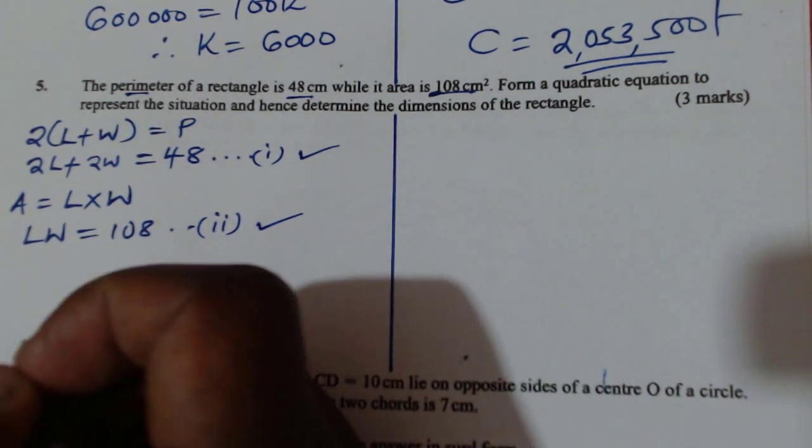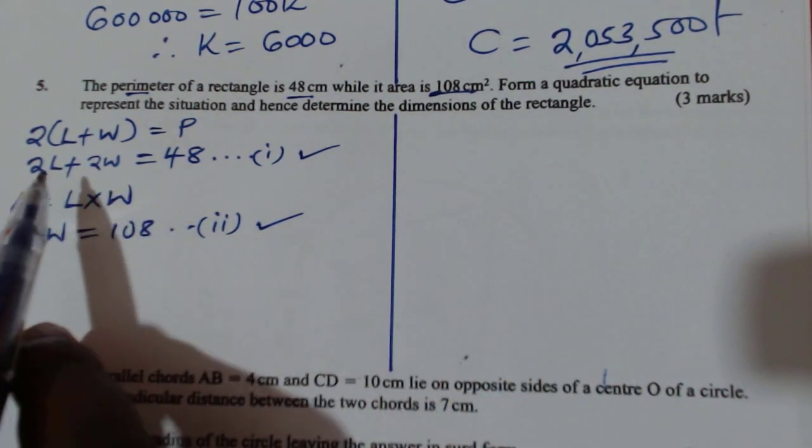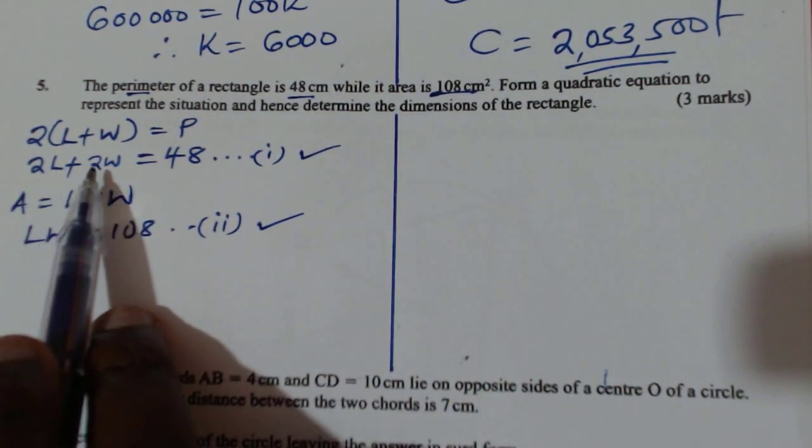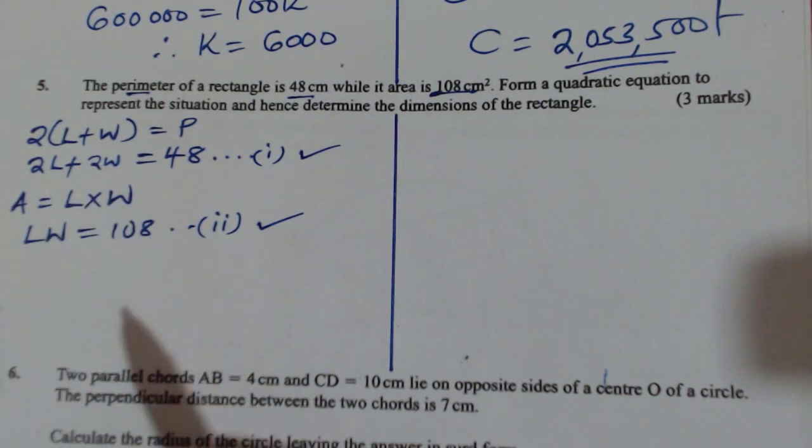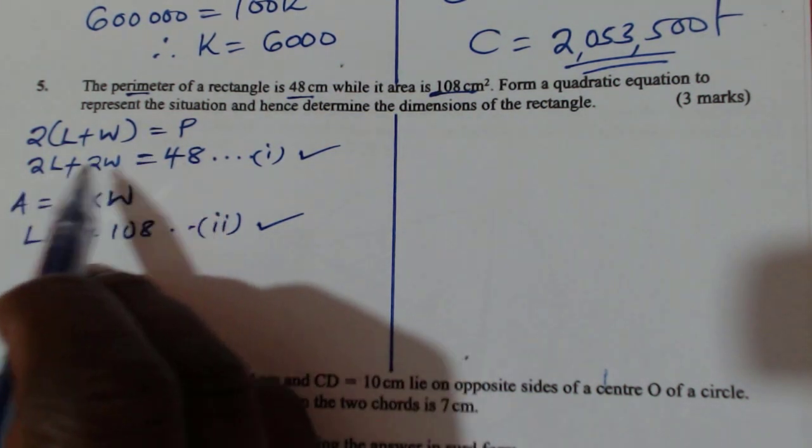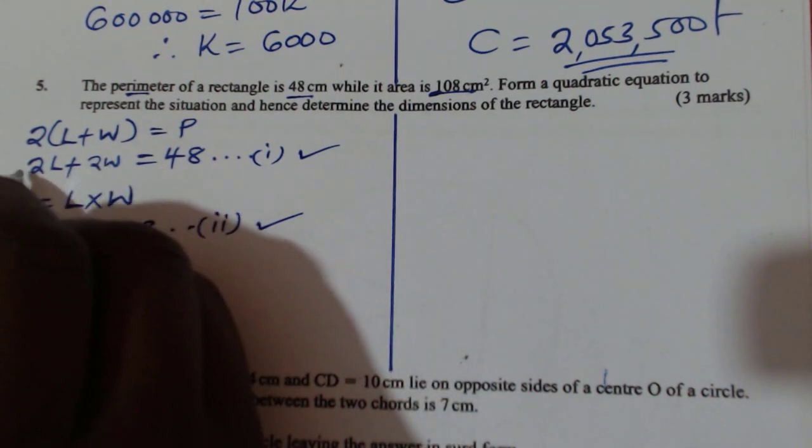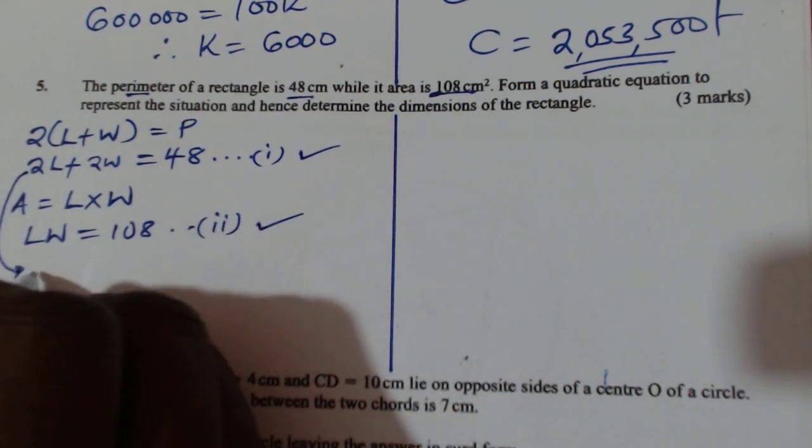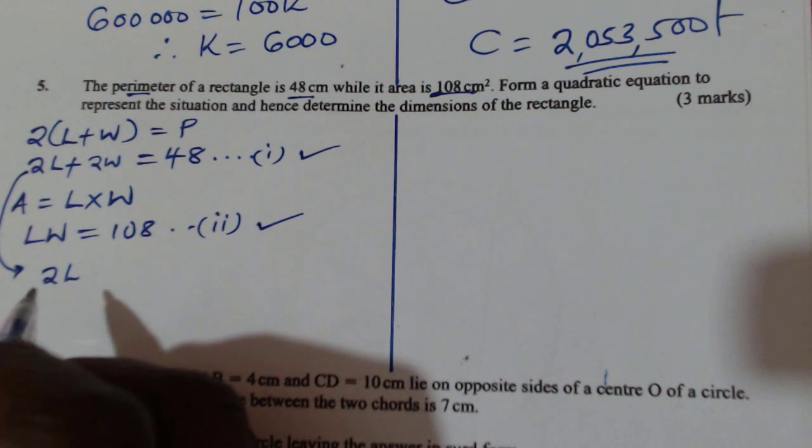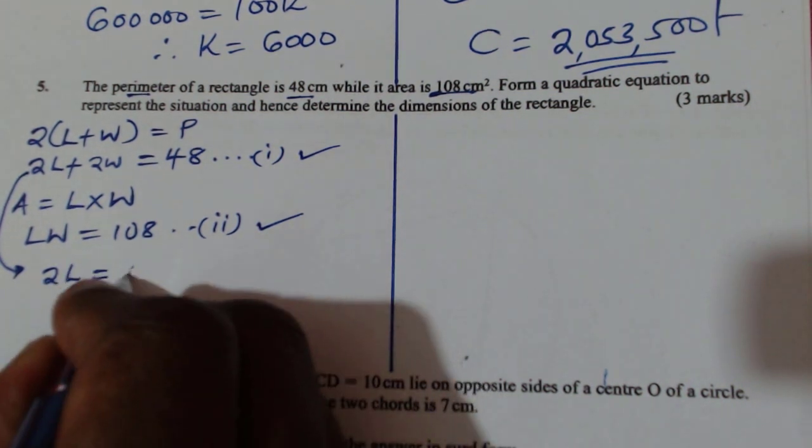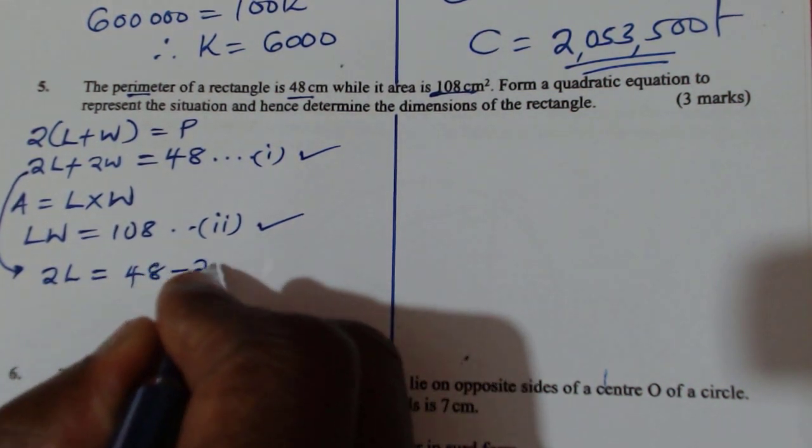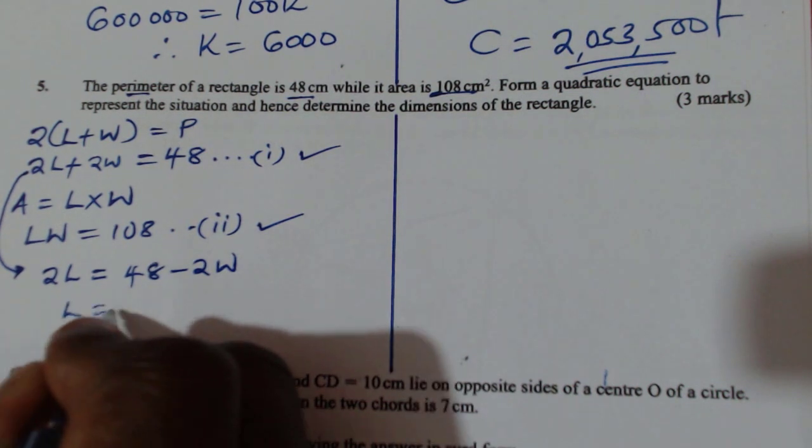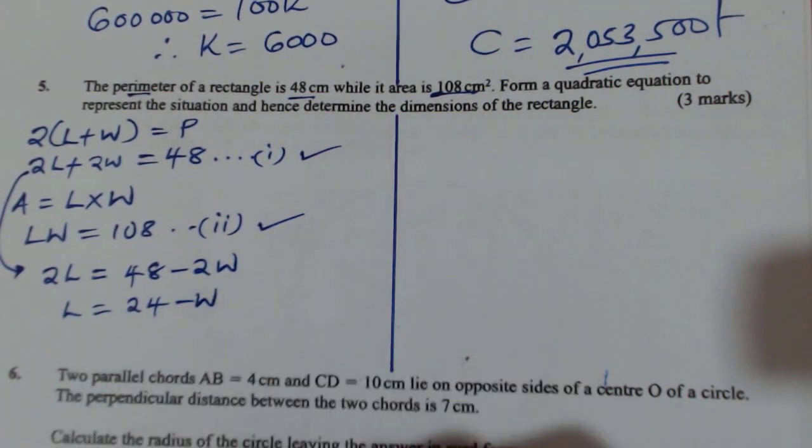if you look at the first equation here, I want to make L the subject. So make L the subject from here. Get 2L equals 48 minus 2W. So L will be given by 24 minus W.